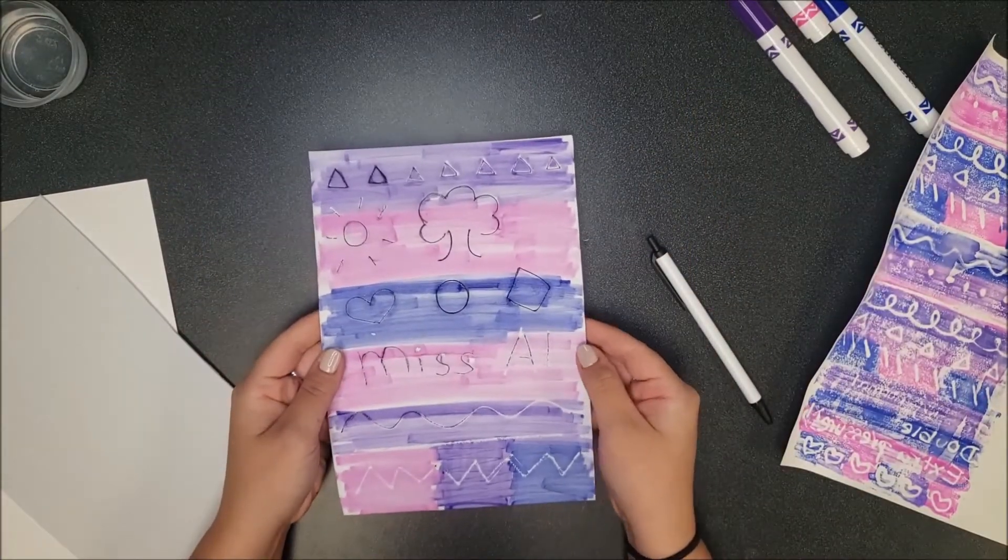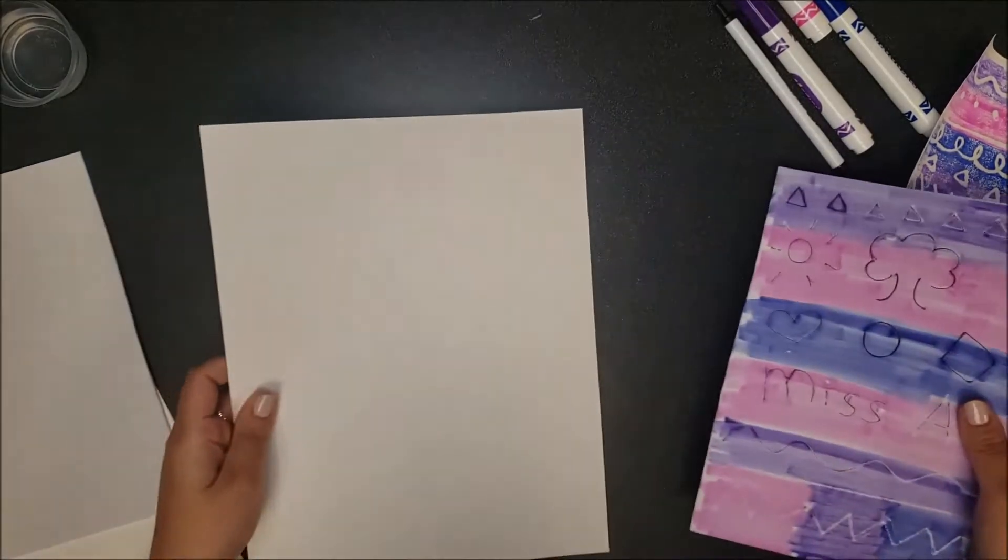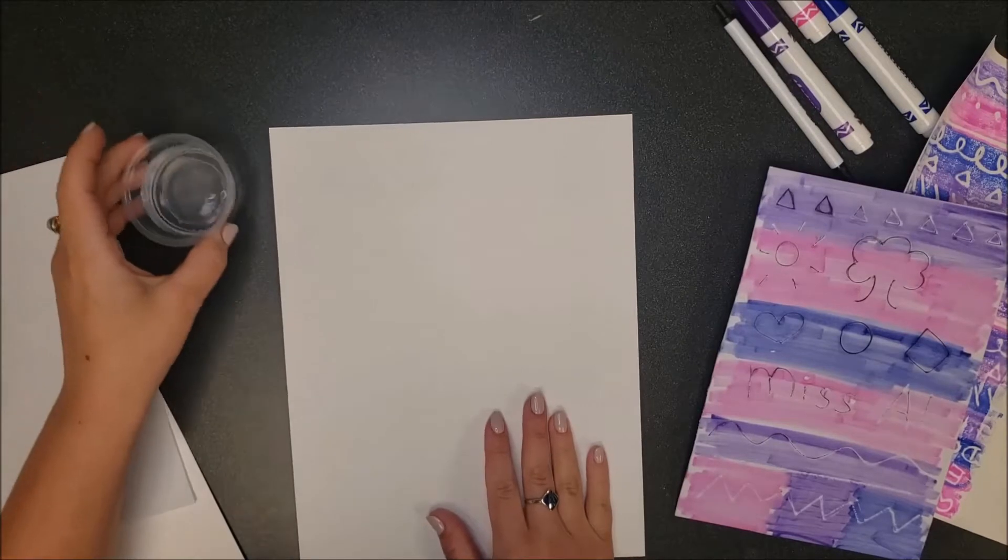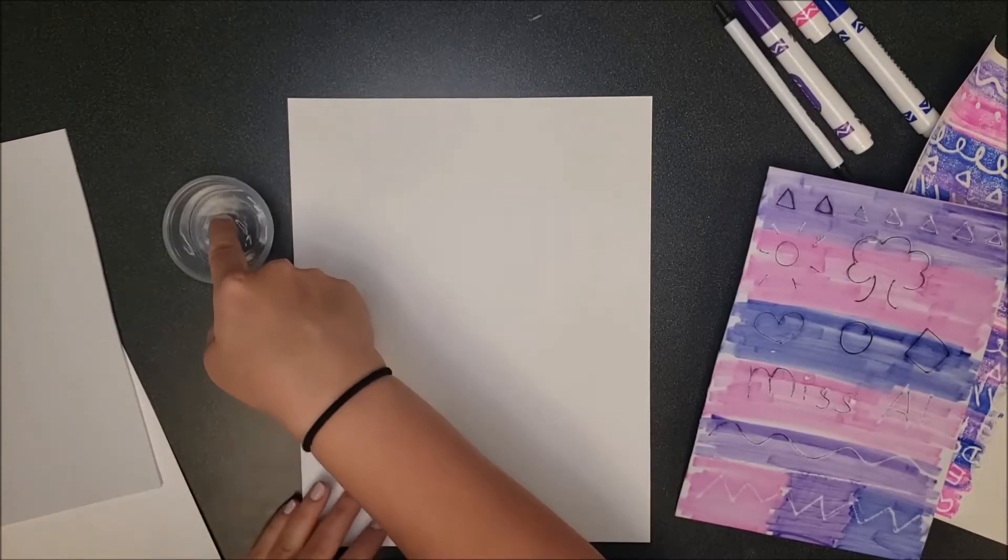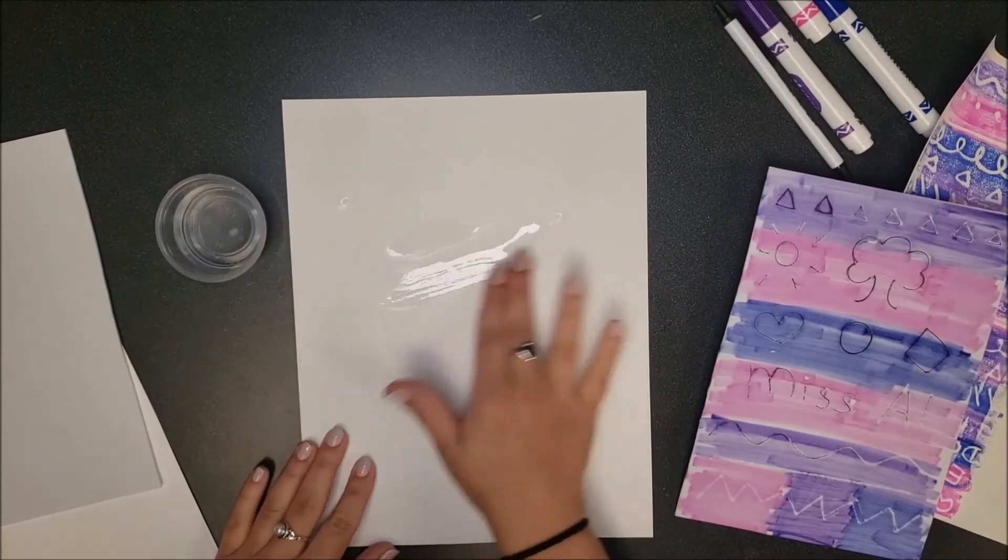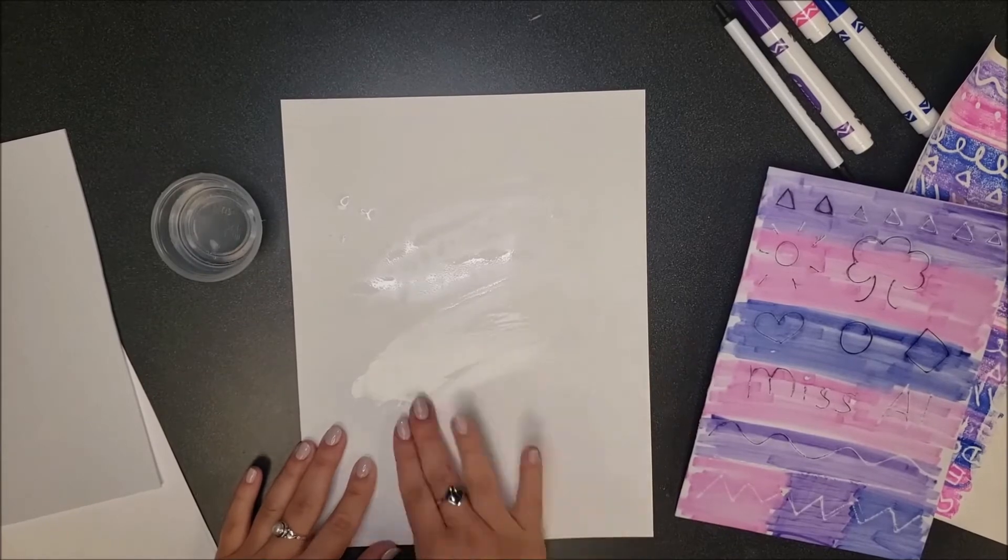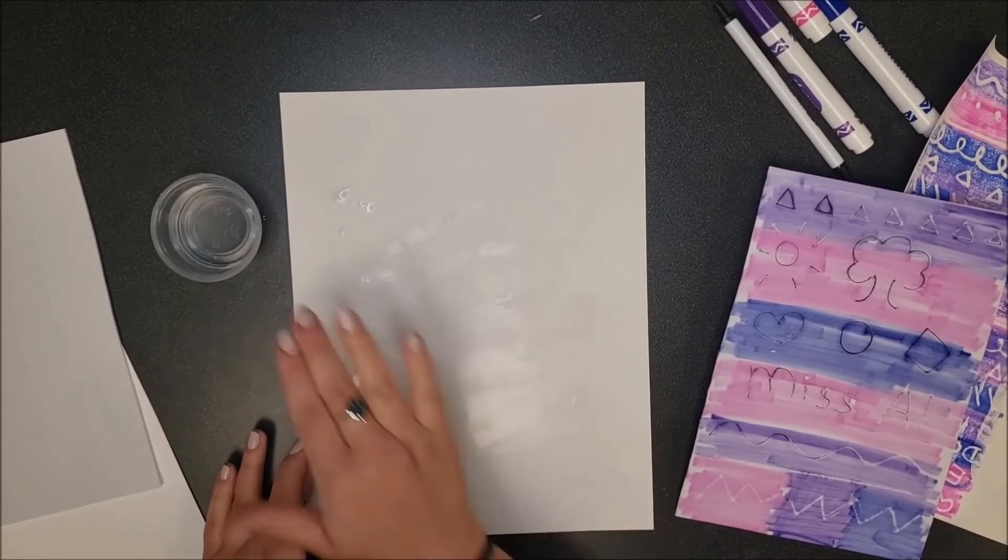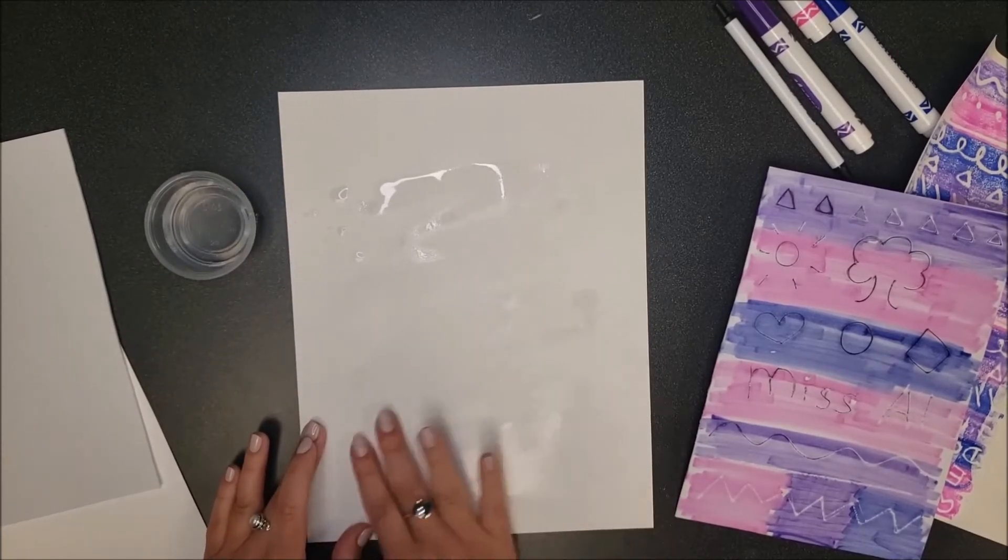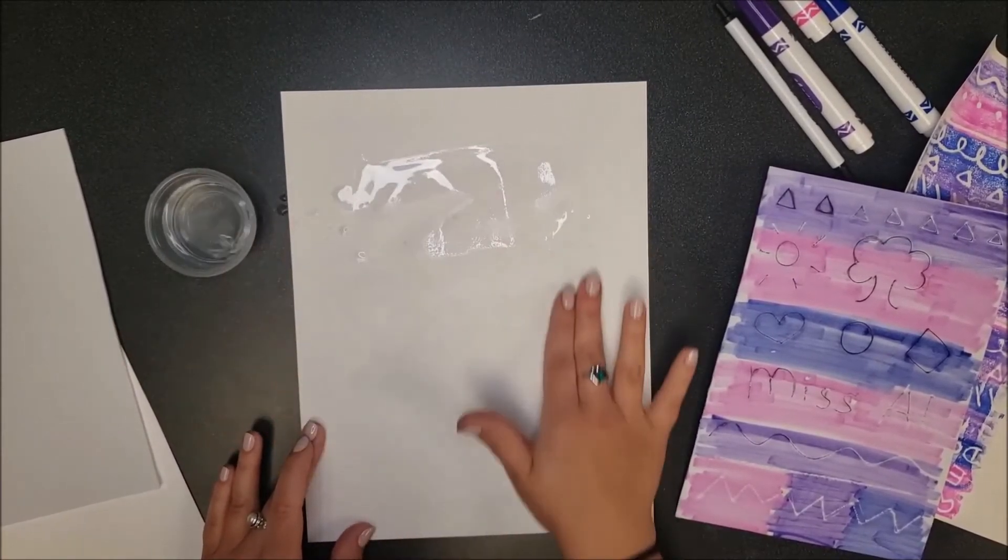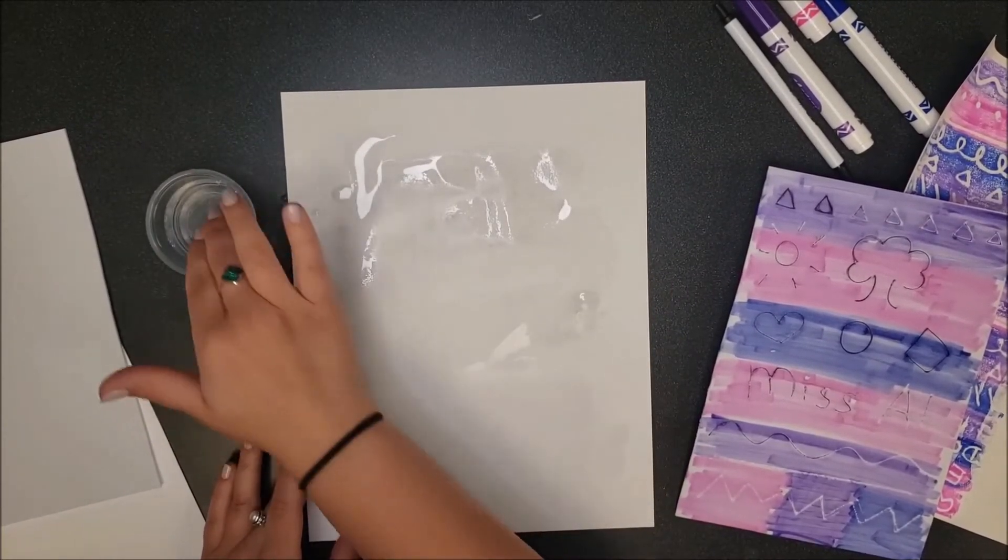Once you've covered your piece of foam, take out your piece of paper. Then take your water and wet your paper. You can dip your finger and just put it on the paper. You don't want your paper to be too wet but it definitely needs to be wet for this to work.